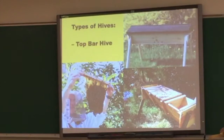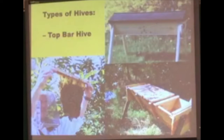Another very common type of hive in the bee kingdom is called the top bar hive. A top bar hive is a single story frameless bee hive in which the comb hangs from removable bars. Top bar hives are popular with some beekeepers who believe it is a more natural form of beekeeping.